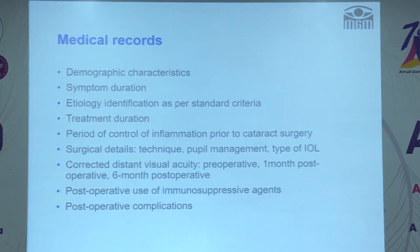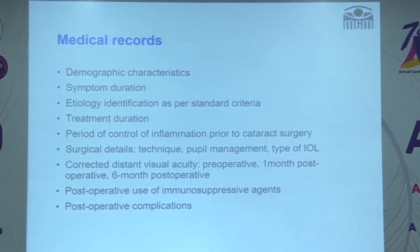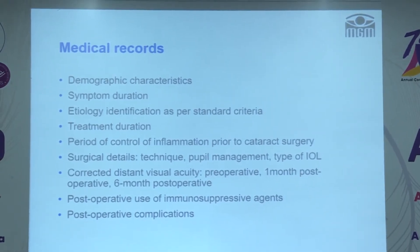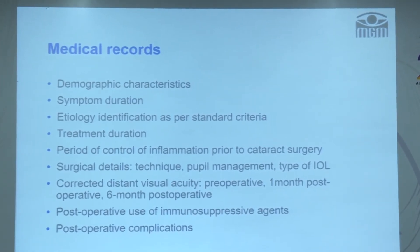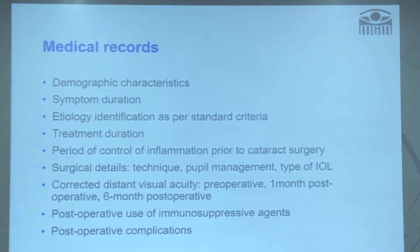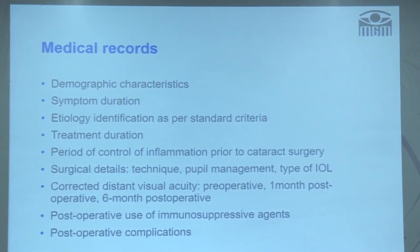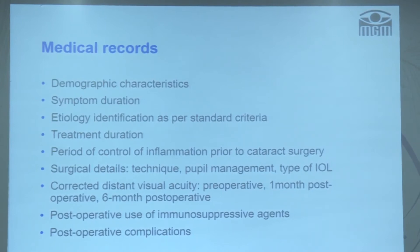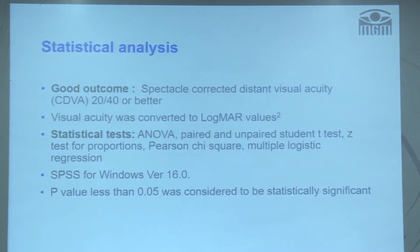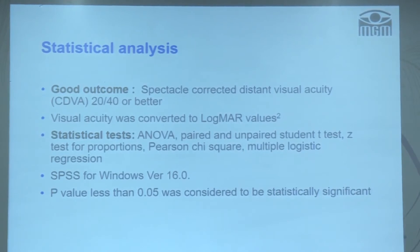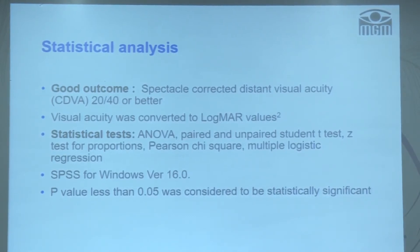Medical records were reviewed for demographic characteristics, clinical features, type of uveitis, treatment prior to surgery, type of cataract, intraoperative details, intraoperative and postoperative complications, and visual outcome. We defined a good visual outcome as a spectacle-corrected distant visual acuity of 20/40 or better.